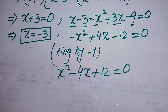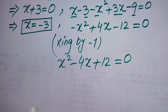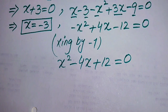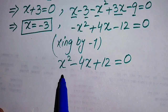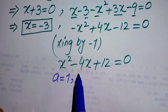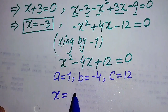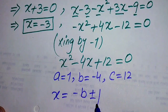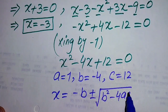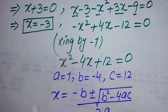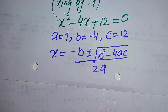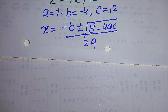This quadratic equation can be solved by three methods: factorization, completing the square, or the quadratic formula. We use the quadratic formula. The coefficients are a = 1, b = minus 4, and c = 12. The quadratic formula is x equals minus b plus or minus the square root of (b squared minus 4ac), divided by 2a.